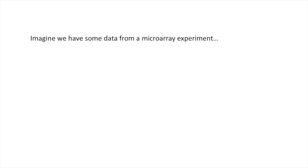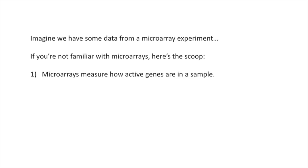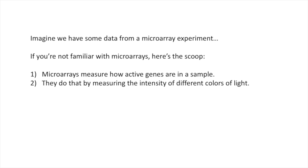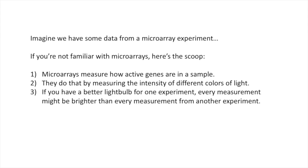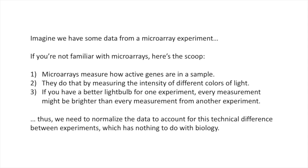Imagine we have some data from a microarray experiment. If you're not familiar with microarrays, here's the scoop. Microarrays measure how active genes are in a sample. They do that by measuring the intensity of different colors of light. If you have a better light bulb for one experiment, every measurement might be brighter than every measurement from another experiment. Thus, we need to normalize the data to account for this technical difference between experiments, which has nothing to do with biology. This is just an example of the type of data you might want to quantile normalize. However, there are lots of other types of data, so if you aren't doing microarray experiments, it still might be useful to pay attention and see how this is done, because it might apply to some other data set that you're working with.